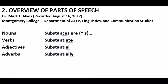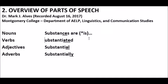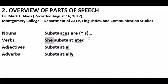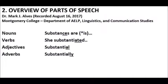With verbs, you can add '-ed' — or just '-d' in this case — to make it past tense. And because it's a verb, we can put a subject in front of it. Let's use 'she': 'She substantiated it.' So we have a pronoun in front of the verb — she substantiated something.